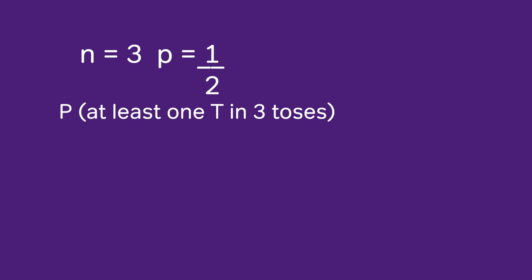The probability is one-half that a certain coin will turn up heads on any given toss. If the coin is to be tossed three times, what is the probability that on at least one of the tosses the coin will turn up tails?